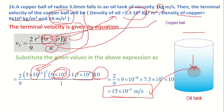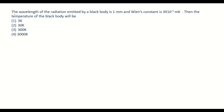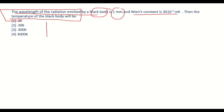Now let us move on to the next question. It states that the wavelength of the radiation emitted by a black body is 1 mm, and Wien's constant is also given. We have to find the temperature of the black body. Before solving, we should recall Wien's displacement law.